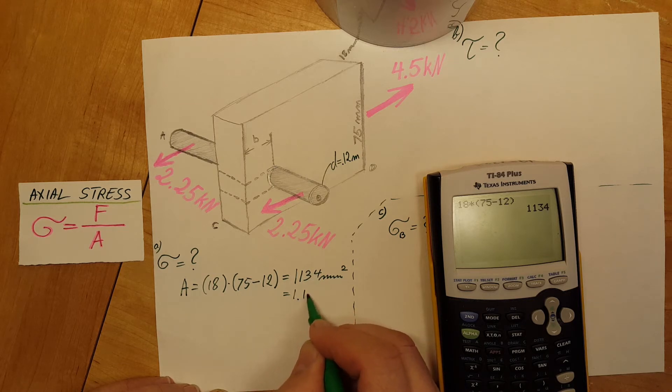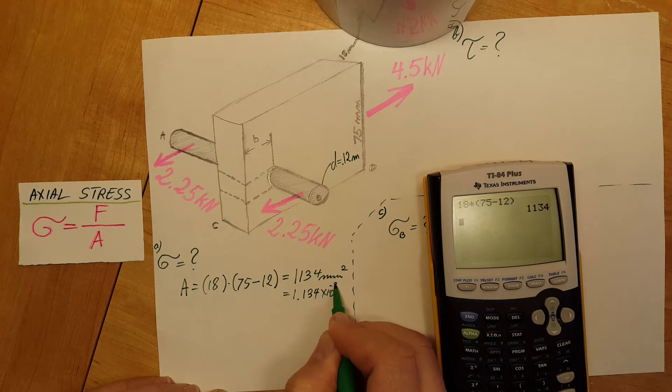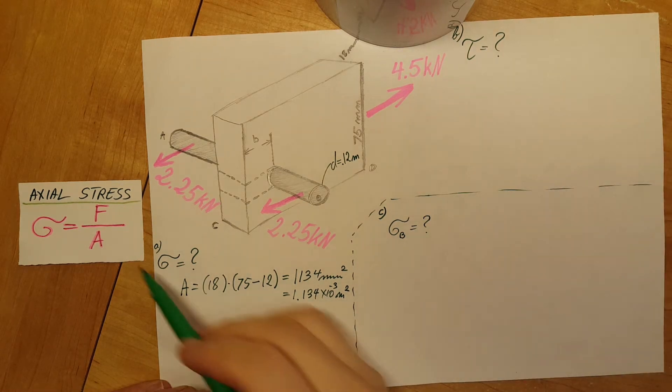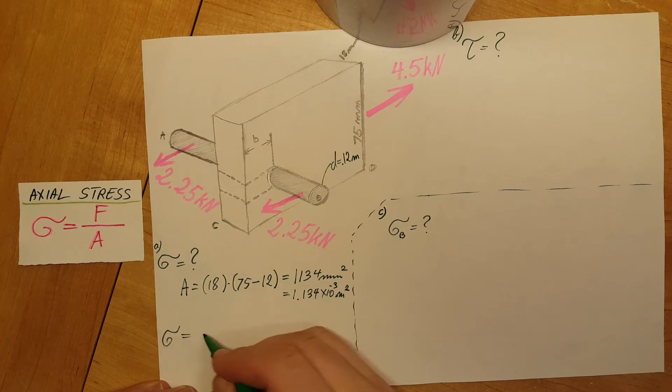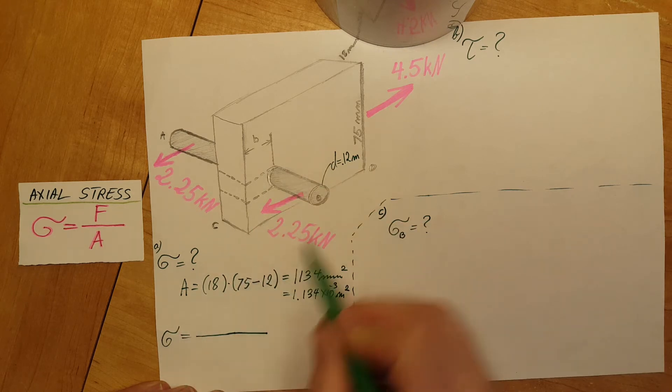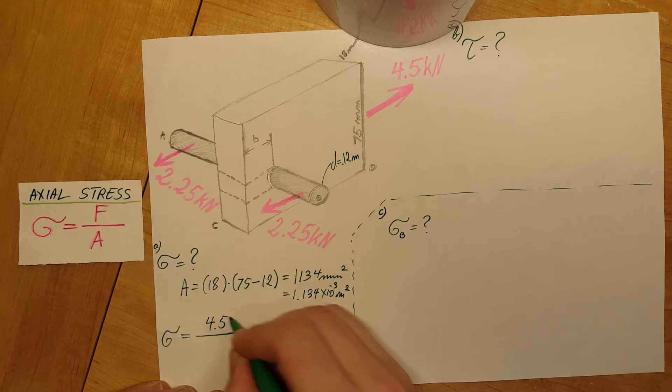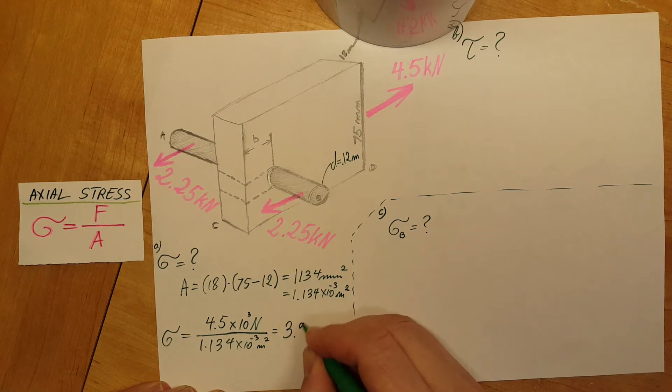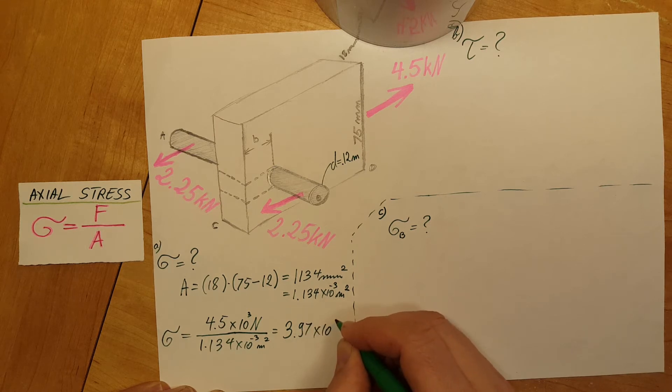This will give us a total value of 1134 millimeters squared, or we can convert it to meters and that would be 1.134 times 10 to the negative third meters squared. Now let's get back to our stress formula. Our force is 4.5 kilonewtons, so I'm going to turn it into newtons, divided by the area 1.134 times 10 to the negative three meters squared. With a calculator we find our value of 3.97 to 4.1025 times 10 to the sixth pascals.